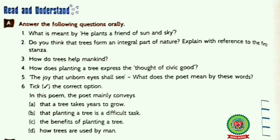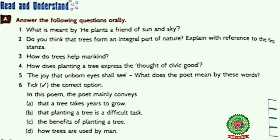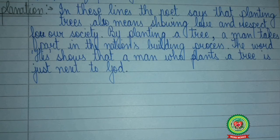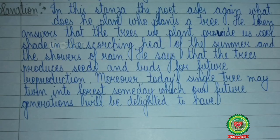Question 3: How do trees help mankind? Refer to the explanation of stanza 2 for the answer. Question 4: How does planting a tree express the thought of civic good? Refer to the explanation of stanza 3 for the answer. Question 5: 'The joy that unborn eyes shall see.' What does the poet mean by these words? Refer to the explanation of stanza 2 for the answer.